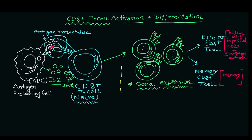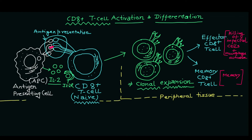This stage shown in the yellow dotted line will occur in peripheral tissues, and the first stage — antigen presentation — will occur in lymphoid organs. So this is the complete process of T cell activation, specifically CD8 positive T cells.